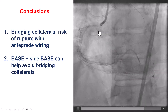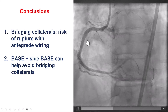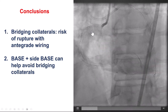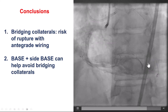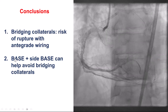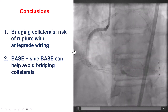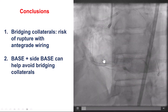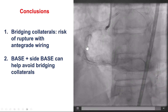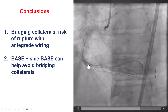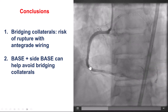To summarize, this is an example of how bridging collaterals can create obstacles in crossing CTOs. The main concern is that if the wire gets into those bridging collaterals, it can cause perforation. Retrograde didn't work in this case, so we performed ADR — antegrade dissection re-entry — with the BASE technique for the proximal cap to get the guide wire into the extra-plaque space. The wire went into a side branch, which we overcame with the Side BASE technique, ballooning the side branch so the Gladius Mongo polymer-jacketed wire avoided it and entered the distal extra-plaque space, followed by Stingray re-entry.